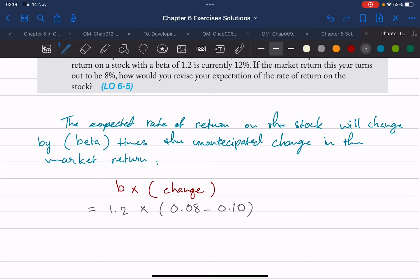The expectation was for the market to generate 10% but it ended up generating only 8%. So that's a drop of 2%. So how is that going to reflect on our stock, which was expected to generate 12%? Let's run the numbers and see. So 1.2 multiplied by 0.08 minus 0.1, and that would be minus 2.4%.